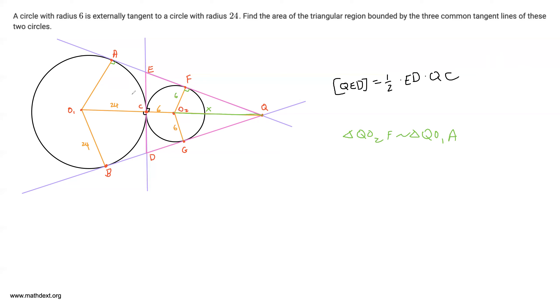First of all, this radius is 6, this radius is 24. So our similarity ratio is, the bigger one to the smaller one, is 24 over 6, which is also, let's take a look at the ratio of their hypotenuses. O1Q is equal to 24 plus 6 plus x, which is 30 plus x. And O2Q, the smaller hypotenuse, is just x.